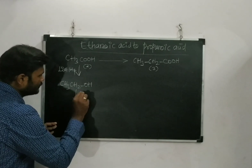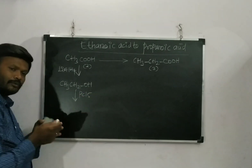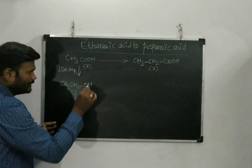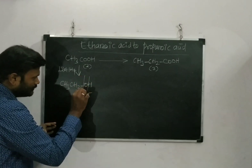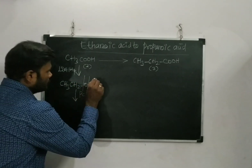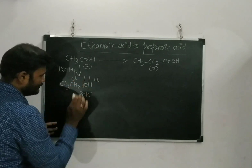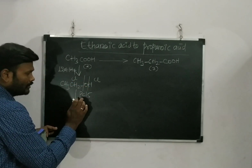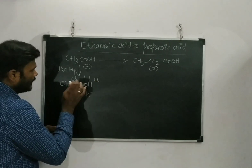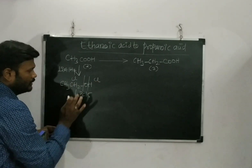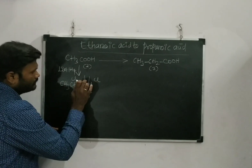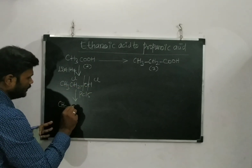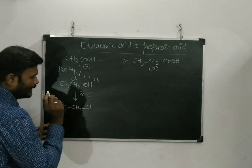After getting the alcohol, I have to use either PCl5 or SOCl2. When you use SOCl2, there is one Cl. When you use PCl5, there are five Cl atoms; one Cl is used here and one Cl is used here, so remaining PCl3 is there, which can be attached with POCl3. So I will be getting the product CH3, CH2, Cl.